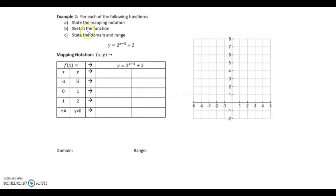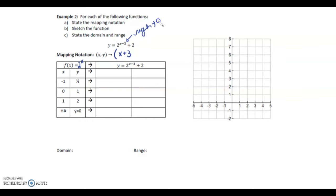Example 2: for each of the following functions, we're going to state the mapping notation, sketch the function, and then state the domain and range. The mapping notation — our base graph is 2 to the x — every x value we're going to add 3, since this is right 3, and every y value we're going to add 2, since this is up 2.